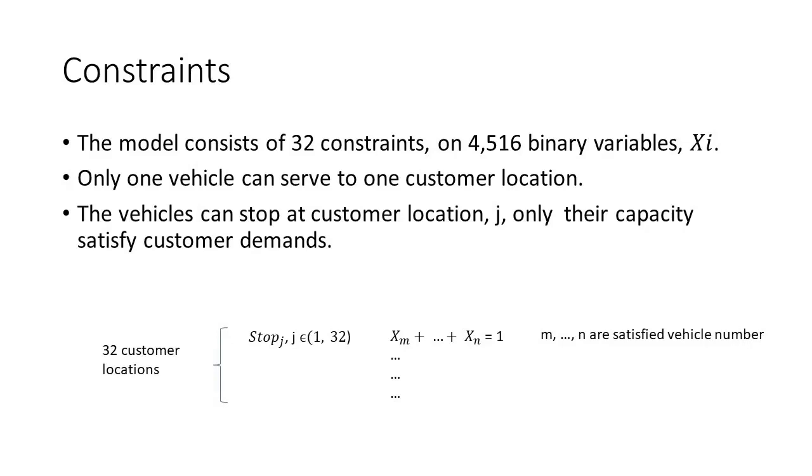Because we have 32 customer locations, the model consists of 32 constraints on 4,516 binary variables.